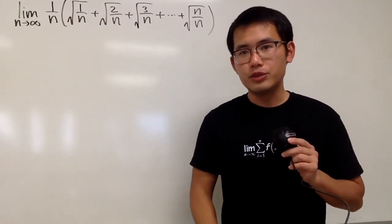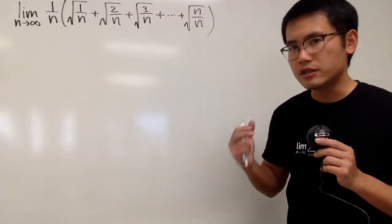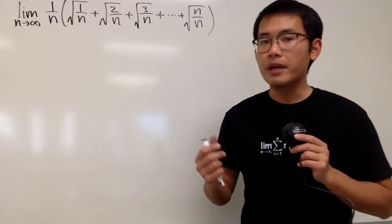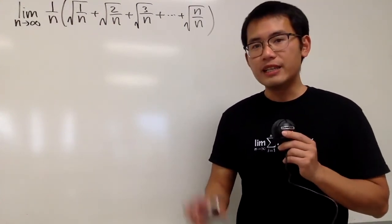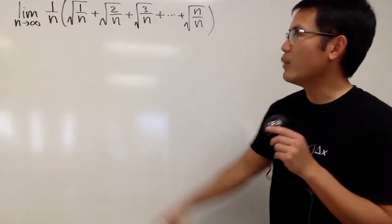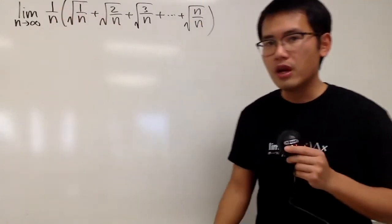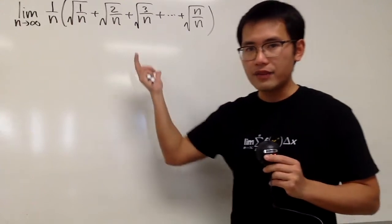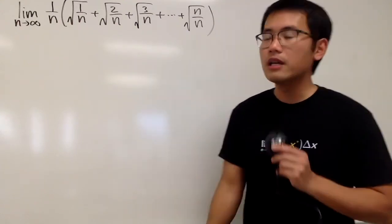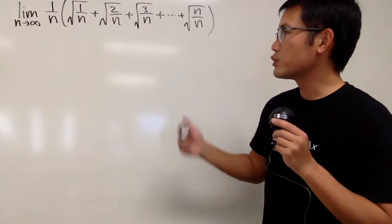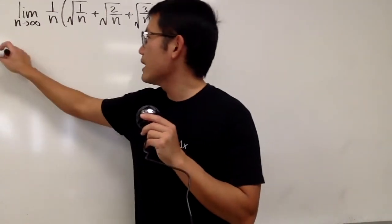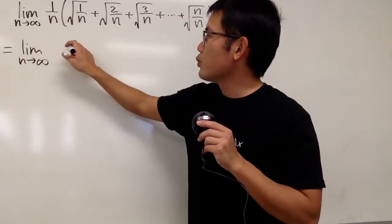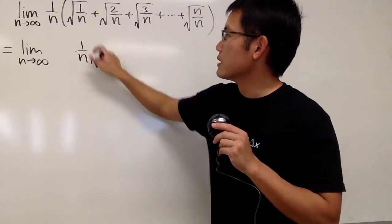Now we are going to compute this limit. Notice that this right here is actually a Riemann sum situation — it represents the area under some curve from one number to the other. When we do this calculation, we should pay attention to the Δx part first, and that's usually the number over n. We do have that, which is this 1 over n right here. We didn't have the sigma notation — it's written in expanded form — so we can write this down as the limit as n goes to infinity, and this right here is just 1 over n times the square root.